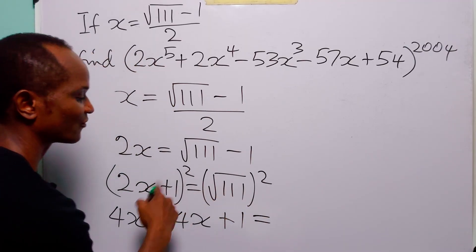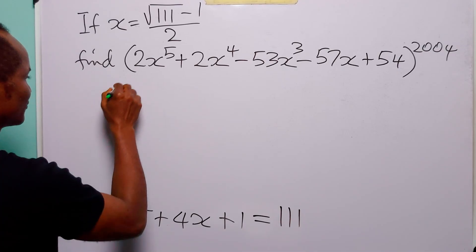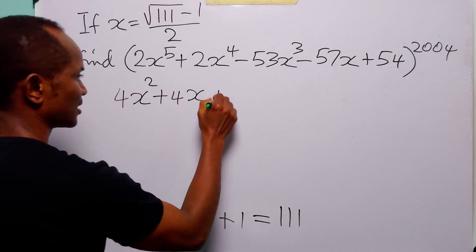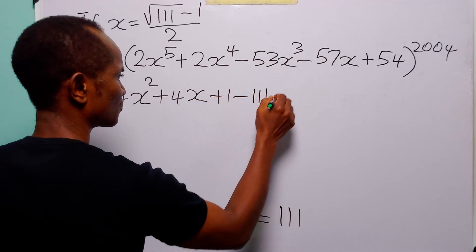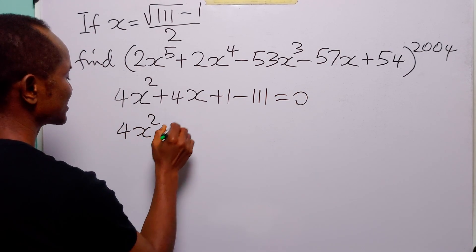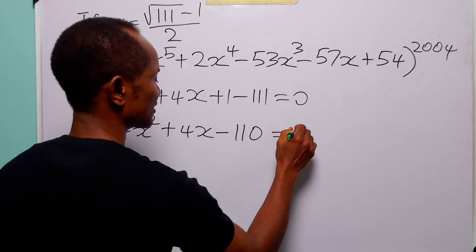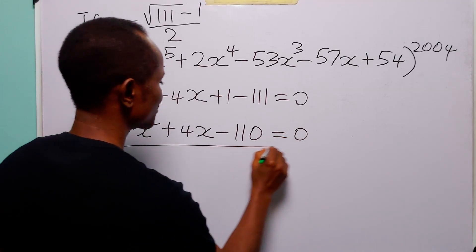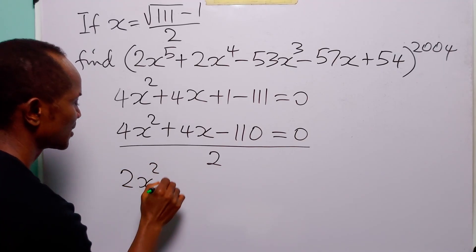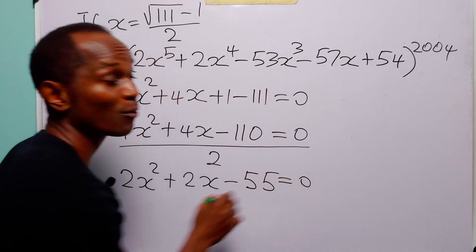Rearranging: 4x² + 4x + 1 − 111 = 0, which gives 4x² + 4x − 110 = 0. Dividing through by 2 we get 2x² + 2x − 55 = 0. This is our minimal polynomial for x.